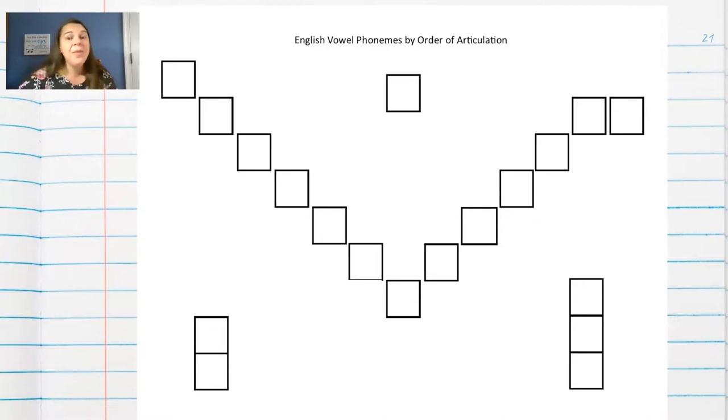Well, when you count schwa, there are actually 19 vowel sounds. So it's really important that we be clear with students, that we understand this ourselves, and that we be clear with students and help them understand how the vowel sounds in English work.